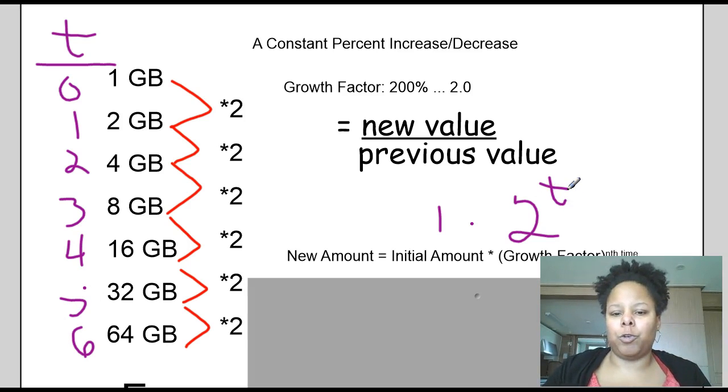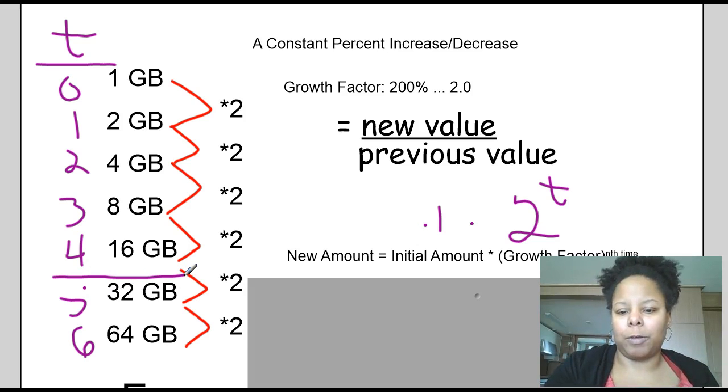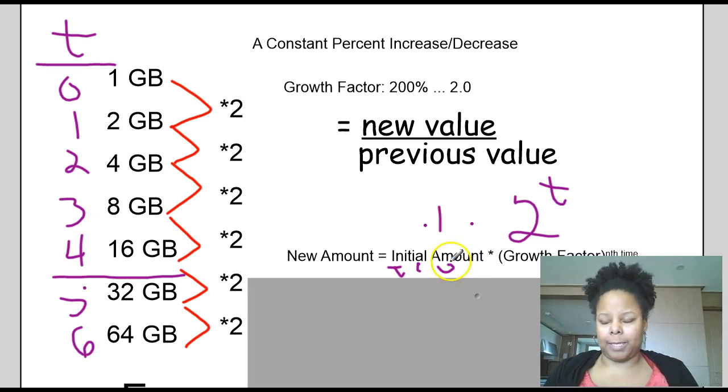So if I want to figure out what the new amount is, let's say at the fourth level, I do one times two to the four and I should get 16. And the hint is the initial amount is when T is equal to zero, which is why it was one in this case.